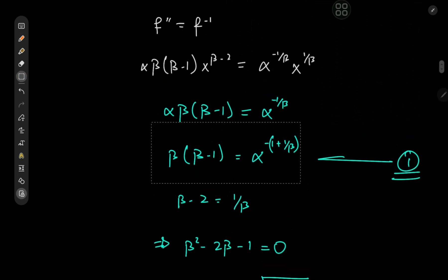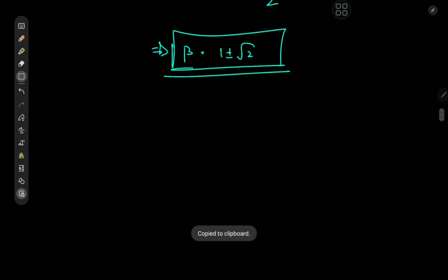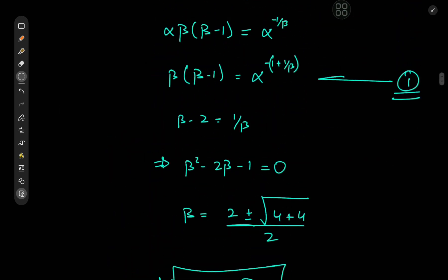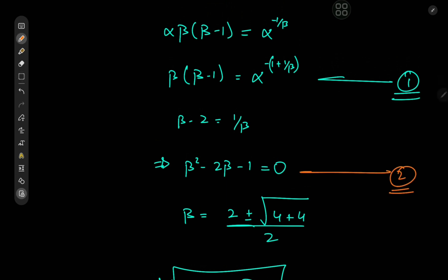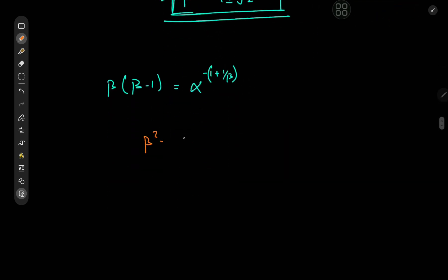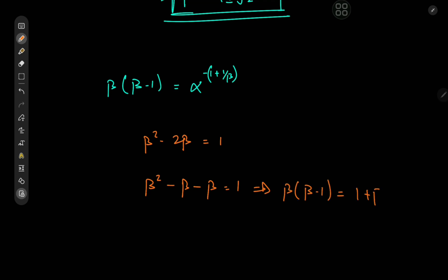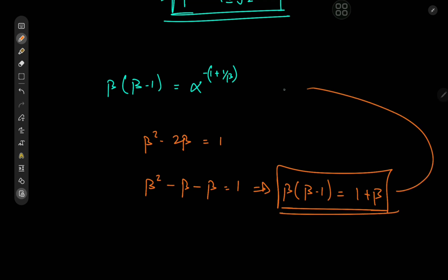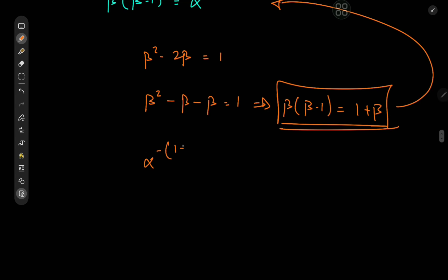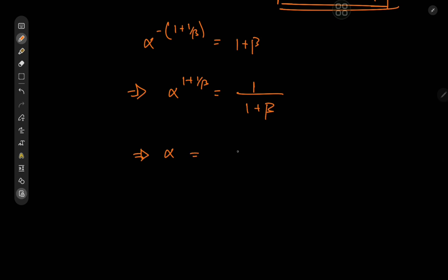Recalling the coefficient equation, let me copy it down and work with equation 2. From equation 2 we have beta squared minus 2 beta equal to 1, which expands as beta times beta minus 1 equal to 1 plus beta — a slightly nicer form we can substitute in. So the coefficient equation becomes alpha to the negative 1 plus 1 over beta equal to 1 plus beta, which implies alpha to the 1 plus 1 over beta equals 1 over 1 plus beta.